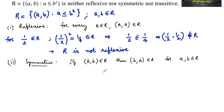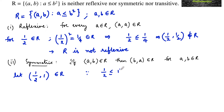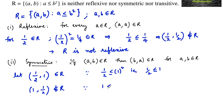Let us consider an example. Let (1/2, 1) belong to R, since 1/2 ≤ 1² = 1, which satisfies the relation. Now, (1, 1/2) does not belong to the given relation, since 1 is not less than or equal to (1/2)².